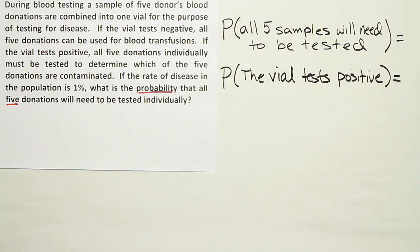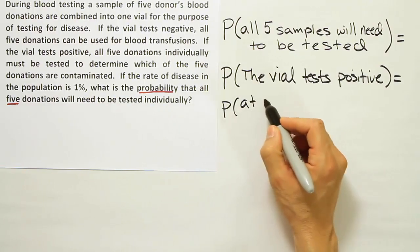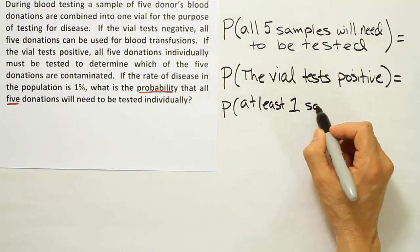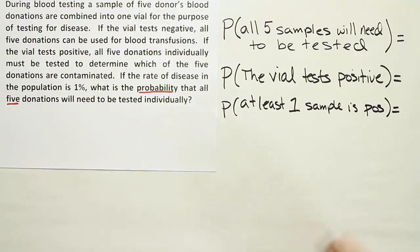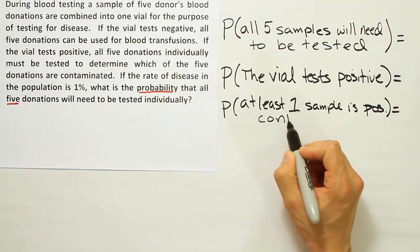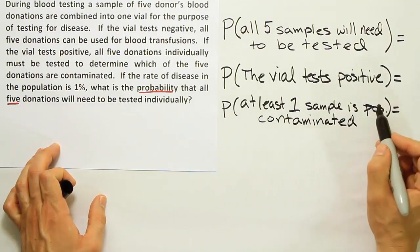Now I have to think about what it means for the vial to test positive — what does that actually mean? In the real-world scenario, the blood bank puts five samples into a vial and tests it. If it tests positive, does that mean one blood sample is positive? Two? Three? I think the most accurate way to describe this is: at least one sample is contaminated. That's the language of the problem, and that's what causes a positive result.